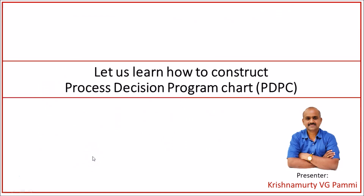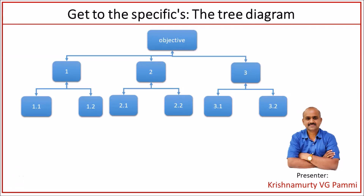Let us learn how to construct a Process Decision Program Chart. To construct it, we must first develop a tree diagram for the proposed plan. In summary, a high-level tree diagram shows the overall objective at the first horizontal level. At the second horizontal level, we outline the main activities required to complete or accomplish this objective.